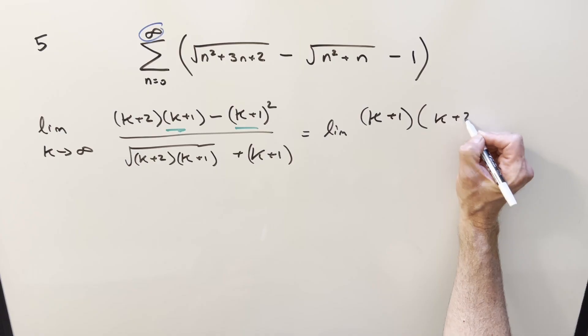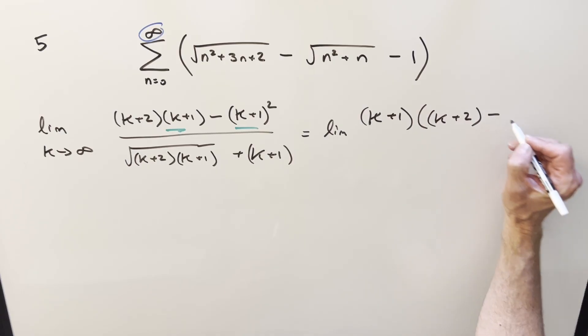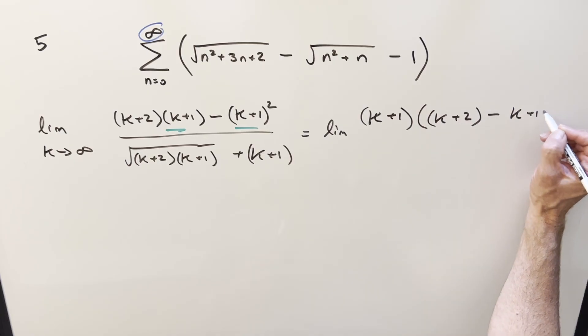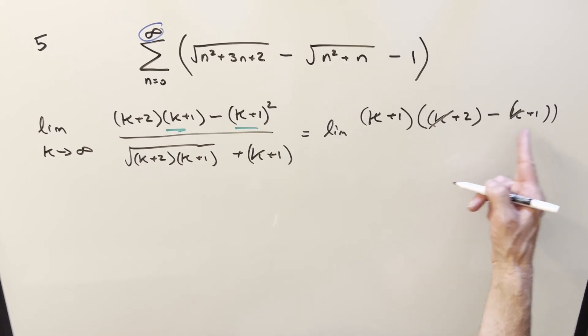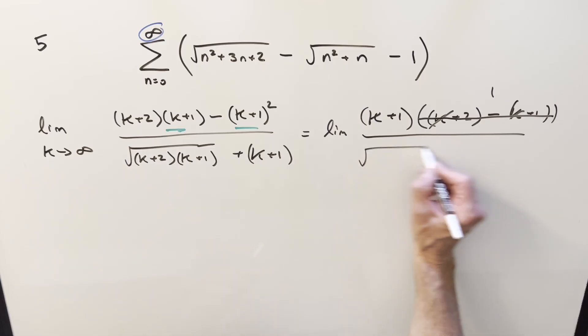So we have what's left is going to be k plus two minus k plus one. But then the k's are going to cancel and two minus one is just one. So this whole piece right here is just a one over the same denominator. But this limit here is one we can do.